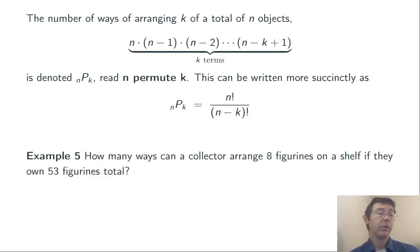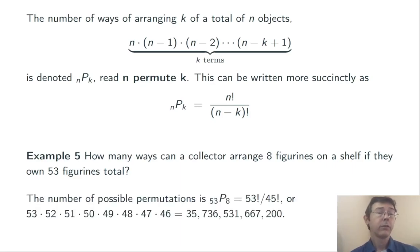Here's an example using n P k. How many ways can a collector arrange 8 figurines on a shelf if they own 53 figurines total? So basically, how many ways can we order 8 objects out of 53 total? This is 53 permute 8. 53 factorial over 45 factorial. This is greater than 35 trillion, a huge number of possible orderings.